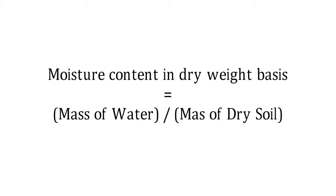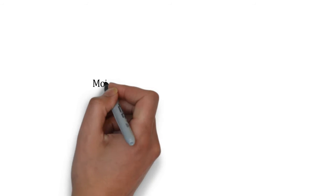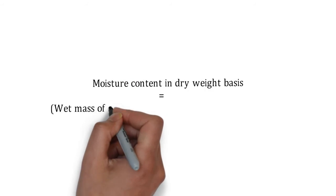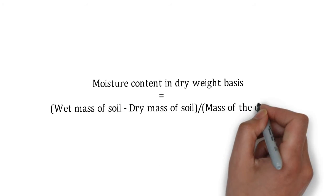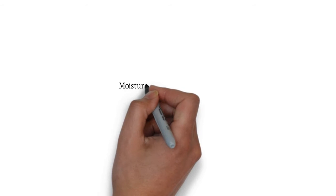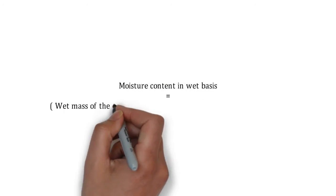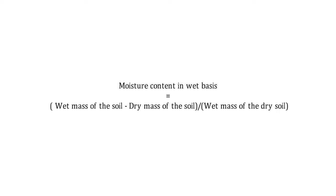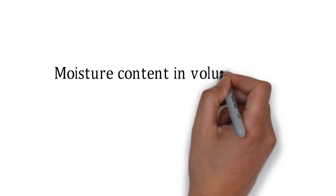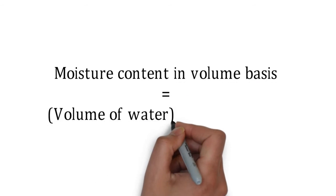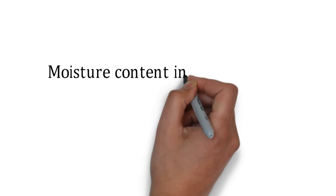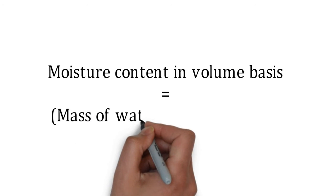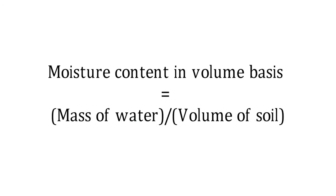As we have already calculated the mass of dry soil, we now find the mass of water, which is the difference between the wet mass and dry mass of soil. The moisture content on a wet weight basis is computed in a similar way — the difference in mass is divided by the mass of wet soil. The moisture content on a volume basis is the volume of water divided by the volume of soil; since the density of water equals 1 g/cm³, this becomes mass of water divided by volume of soil.